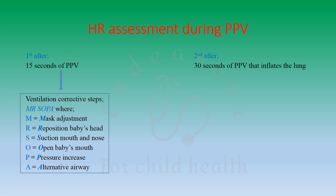If you are providing positive pressure ventilation, you must assess the heart rate after a minimum of 15 seconds. If the heart rate is not increasing and is still less than 100 beats per minute, check whether the ventilation method is correct by taking ventilation corrective steps remembered by the mnemonic MR SOPA: M — mask adjustment, R — repositioning the baby's head, S — suctioning the mouth and nose, O — opening the baby's mouth, P — increasing the pressure of the breath, A — alternative airway placement.